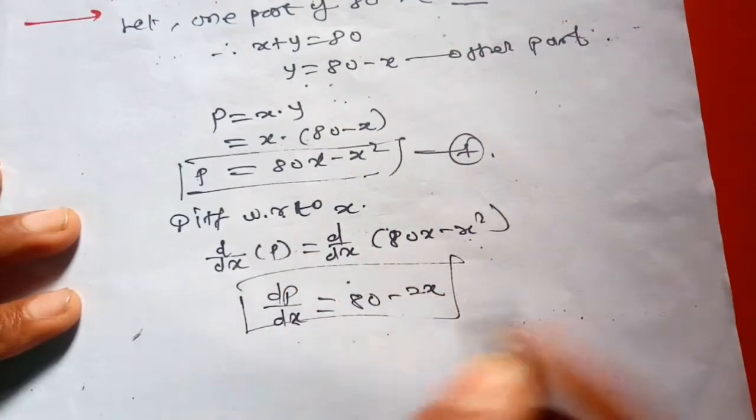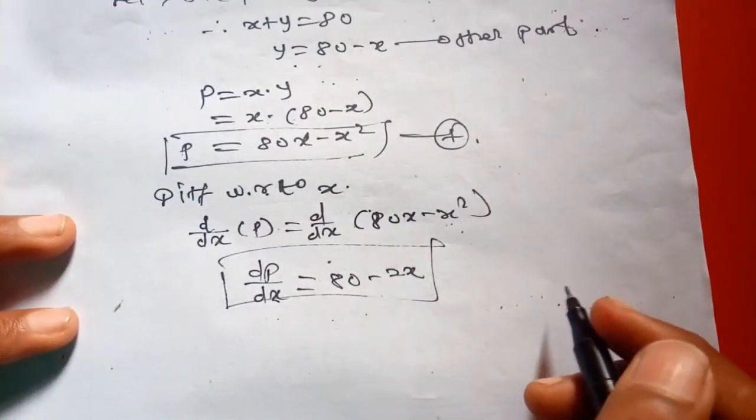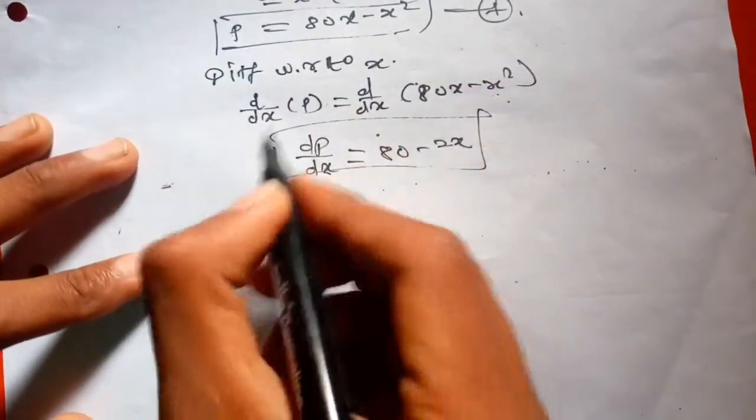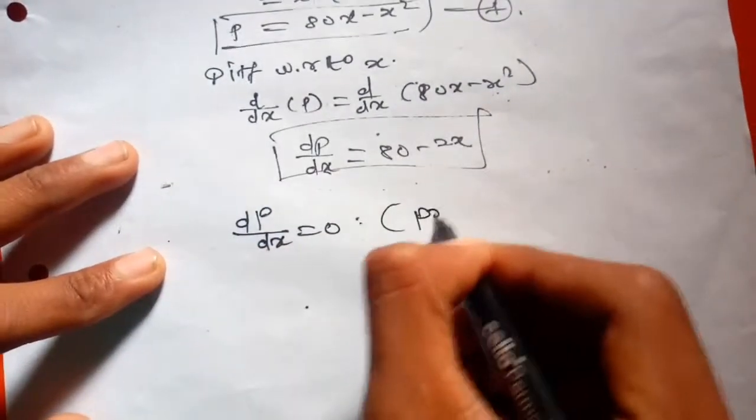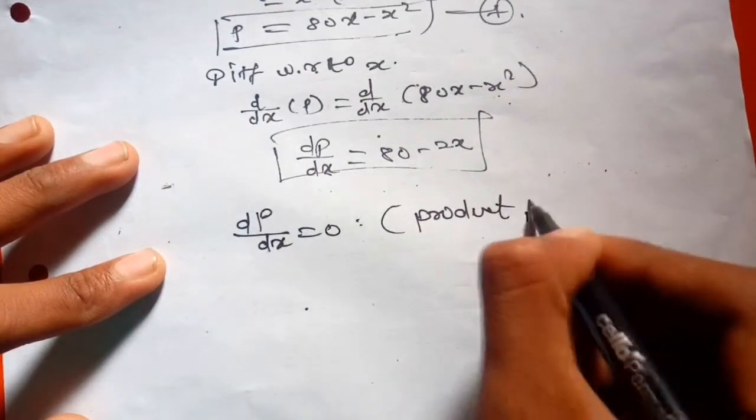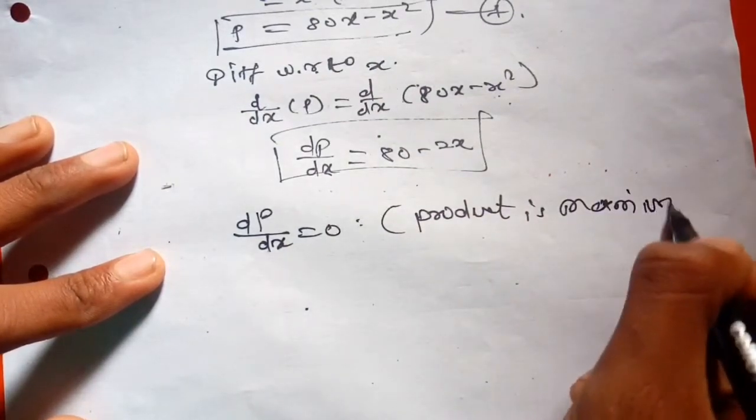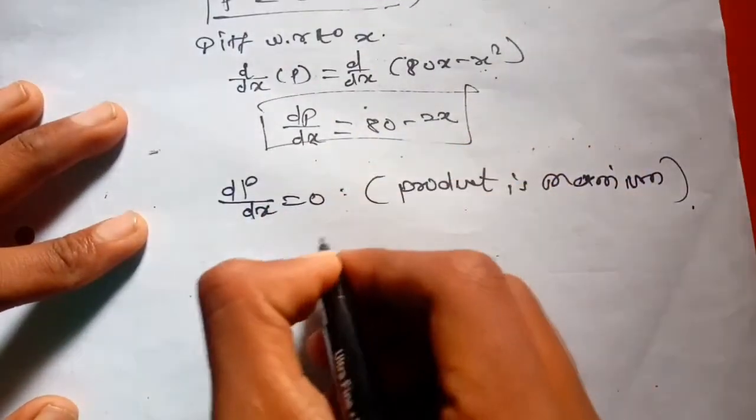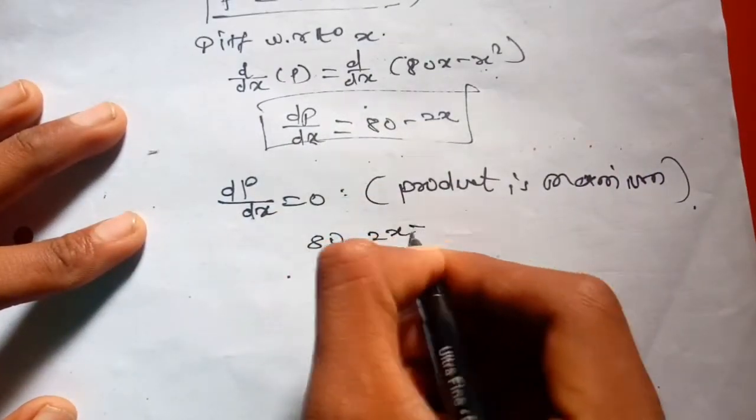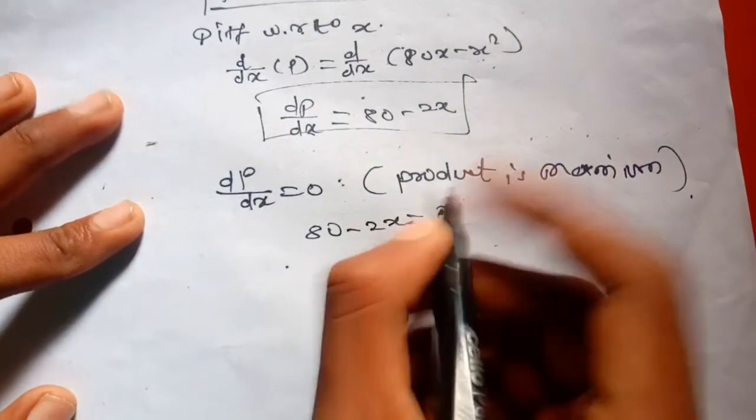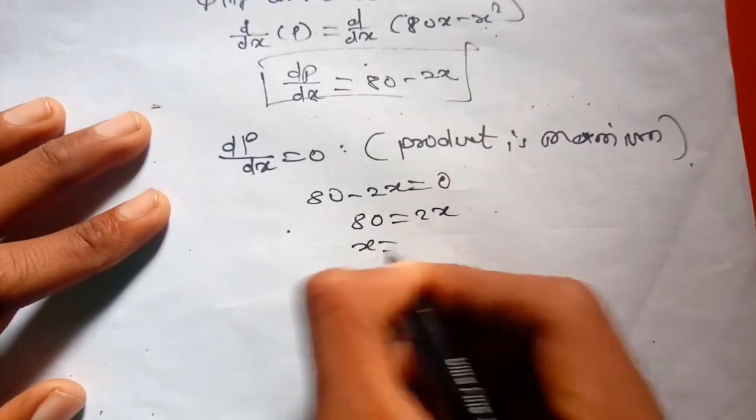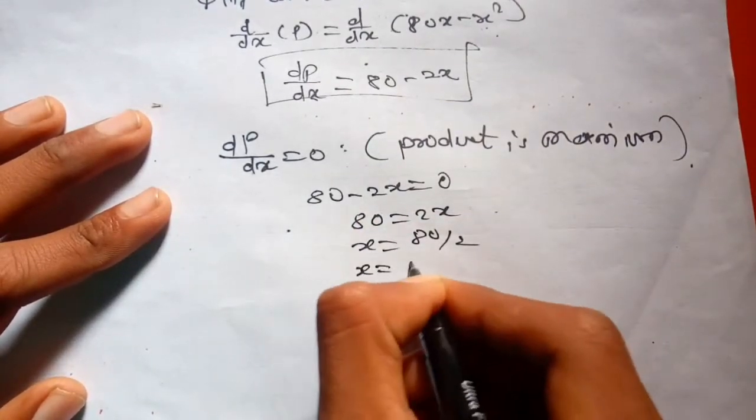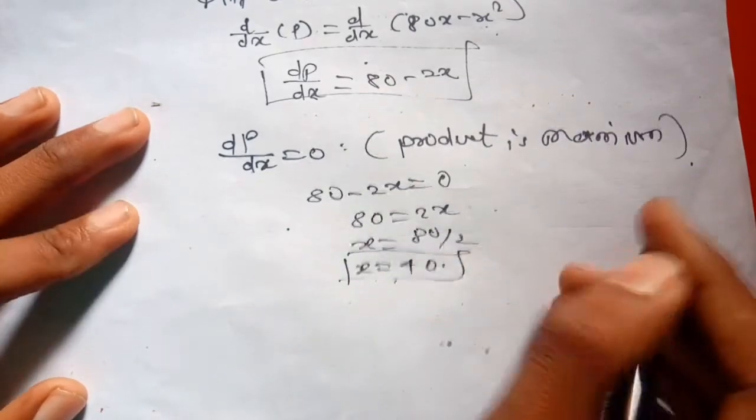For P to be maximum, dP/dX is equal to zero. So 80 minus 2X equals zero. Therefore, 2X equals 80, so X equals 40.